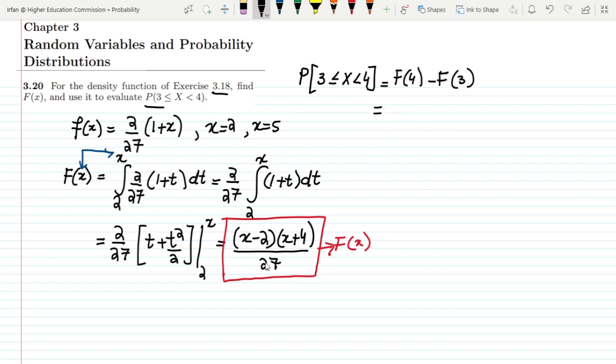So now putting their values and writing all these values in these equations because I know the equation for it. So it will become, let me take this 1 by 27 out of both of them because it will be included in both of them. So now for 4 what I will get is 4 minus 2 and also here 4 plus 4.